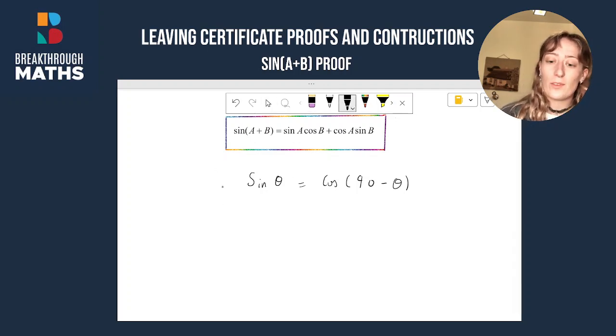Now this proof makes heavy use of this fact I've written down here, which is that sine theta is equal to cos of 90 minus theta. Now what does that actually mean? It means that the sine of any angle is equal to the cos of that same angle but just shifted 90 degrees.